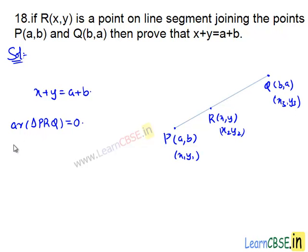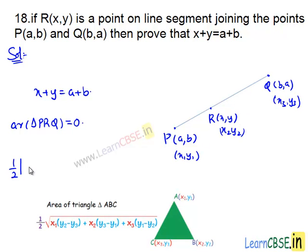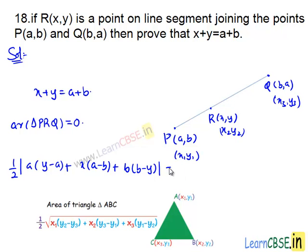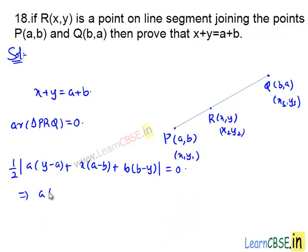Then we have: area of triangle P, R, Q equals half modulus of X1 times (Y2 minus Y3), that is A times (Y minus A), plus X2 times (Y3 minus Y1), which is X times (A minus B), plus X3 times (Y1 minus Y2), that is B times (B minus Y), equals zero. This implies A times (Y minus A) plus X times (A minus B) plus B times (B minus Y) equals zero.